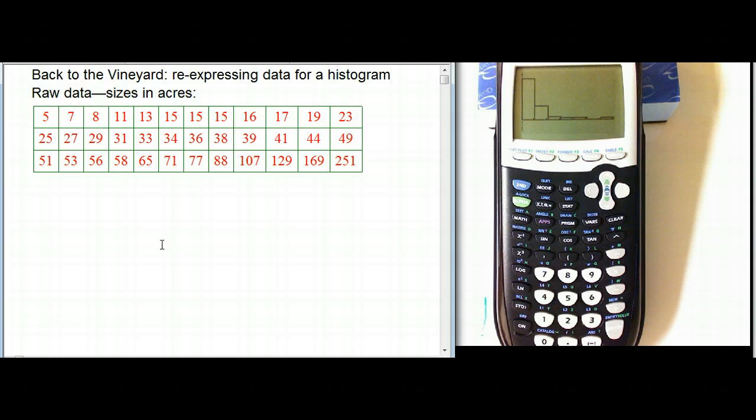And what you see, I don't have the book on the screen, but I have the equivalent histogram on the calculator. When you look at the sizes of these vineyards, this is 36 vineyards of various sizes in acres from 5 to 251, we see this histogram and it's meaningful. You can see that it's very skewed to the right and most of the vineyards are small and a few of them are a bit bigger.